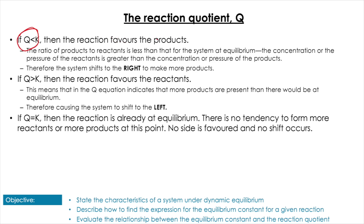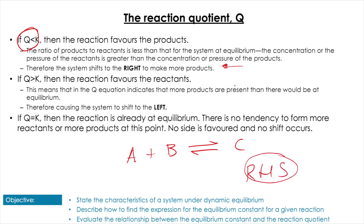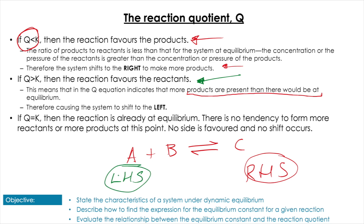When Q is smaller than K, the reaction favors the products — the ratio of products to reactants is less than at equilibrium, so the reaction shifts to the right to increase Q towards K. If Q is larger than K, the right-hand side is larger than it should be and the reaction shifts to the left towards reactants. If Q equals K, the system is already at equilibrium.